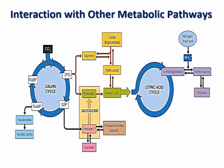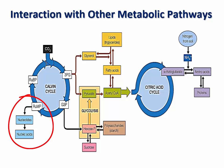For example, 3PG and G3P in the Calvin cycle are used to build fats, and when fats are oxidized, they produce acetyl-CoA, which feeds into the citric acid cycle. Another example is ribulose monophosphate, which is used to produce nucleic acids.